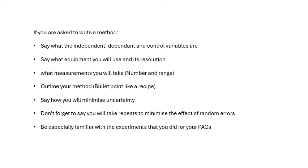If you're asked to write a method, you may well be asked to write a method. Say what the independent and the dependent and the control variables are. In other words, what are you going to change, what are you going to measure, what are you going to keep the same? Say what equipment you will use and its resolution. I'm going to measure the diameter of the wire, I will use a micrometer which has a resolution of a hundredth of a millimeter. What measurements you will take - in other words, how many measurements and what range of measurements. So for the length of the string I will do from 30 centimeters to 100 centimeters at 10 centimeter intervals. The interval, the number, and the range of measurements. Outline your method.